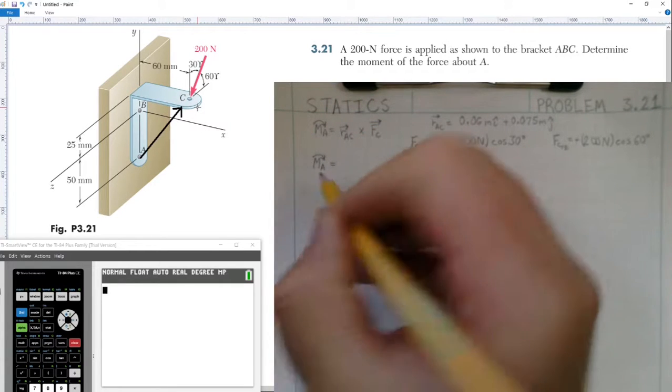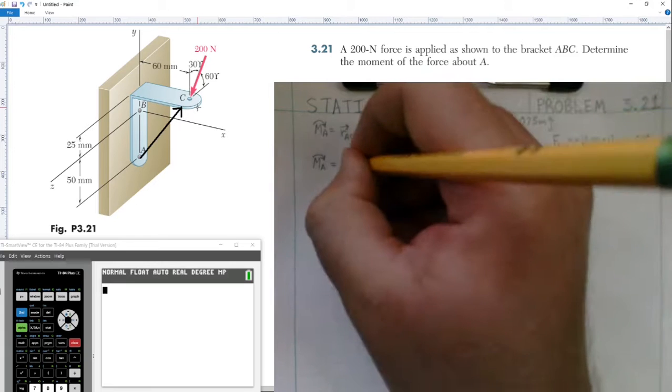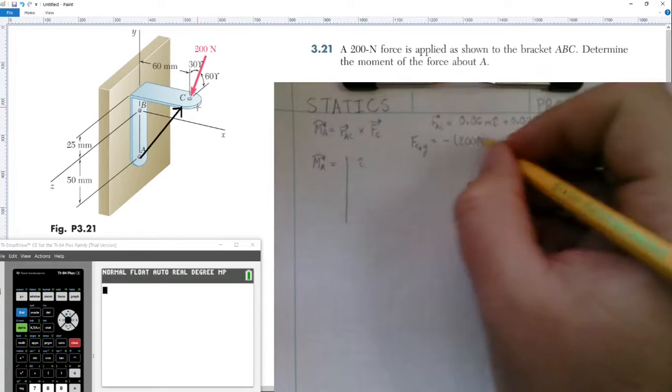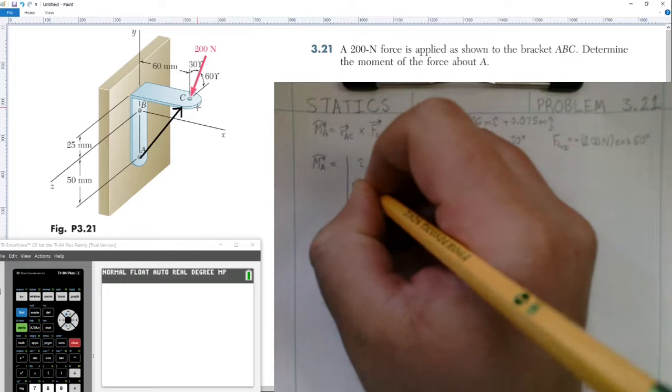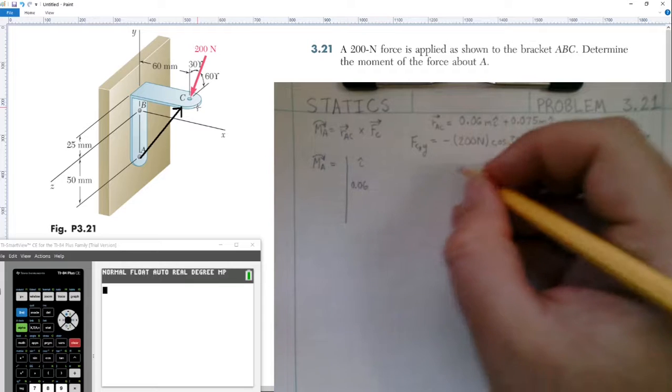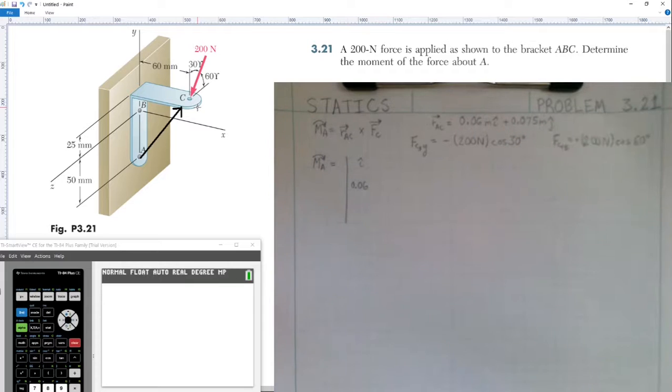This would be broken out into components. It would have an i-hat component of 0.06, and then negative 200 cosine of 30.